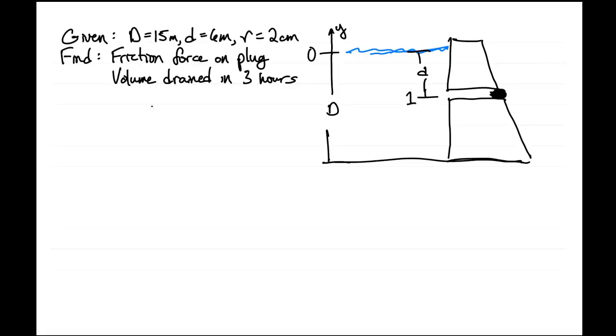In this problem, we're told that we have a dam that is holding back fresh water. It has a depth of 15 meters. There's a horizontal pipe in the dam at a depth of 6 meters. That pipe has a radius of 2 centimeters.